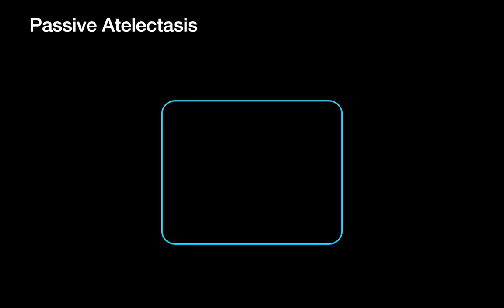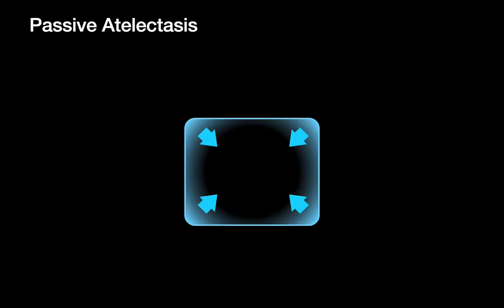Let's start with passive atelectasis. The lung, if left to its own devices, wants to contract into a smaller space — just like a rubber band. If you were to take a lobe out during a lobectomy, even with the bronchus clamped, the lobe would actually take up less volume than on your CT scan, because the lung has recoiled. That's what lung likes to do.